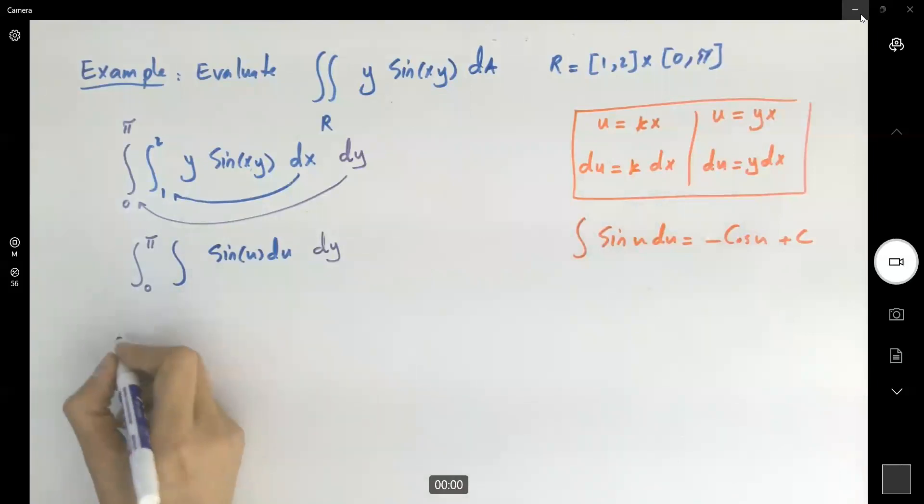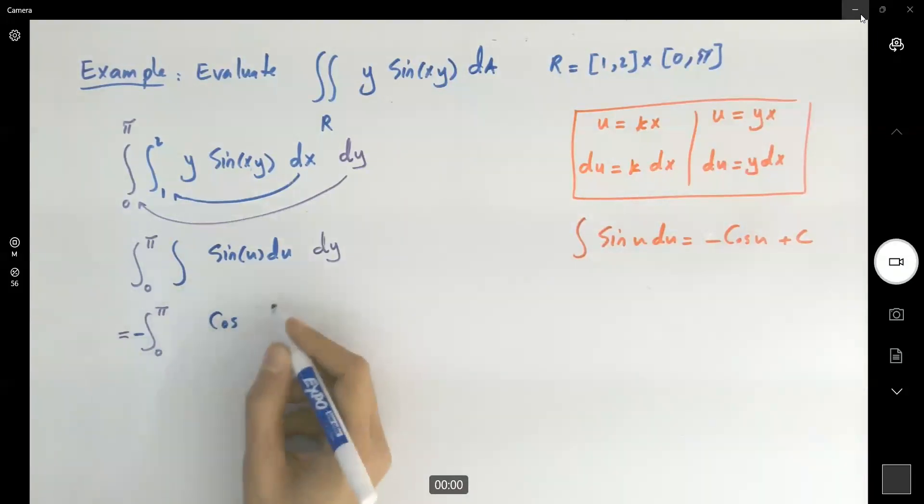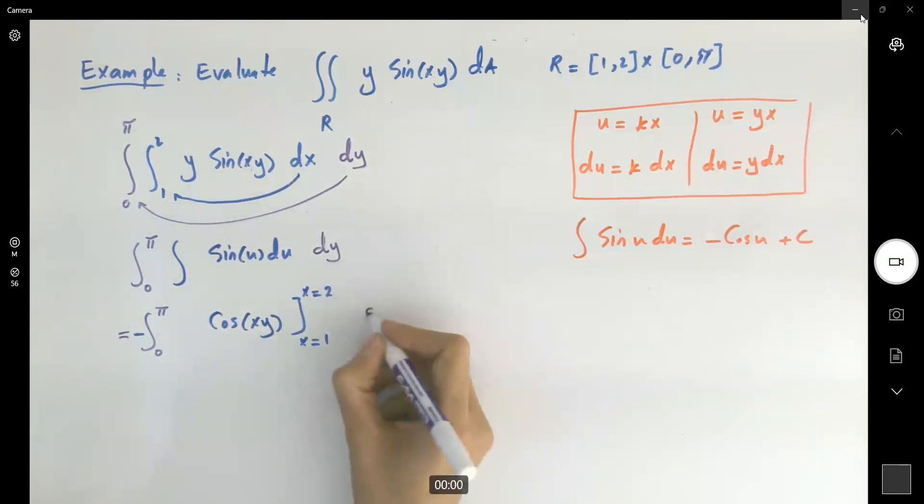So this guy becomes integral 0 to pi, let's put the negative sign outside, minus cosine u, which is just x, y, and our x is bounded between 1 and 2, and you're taking the integral, with respect to y.